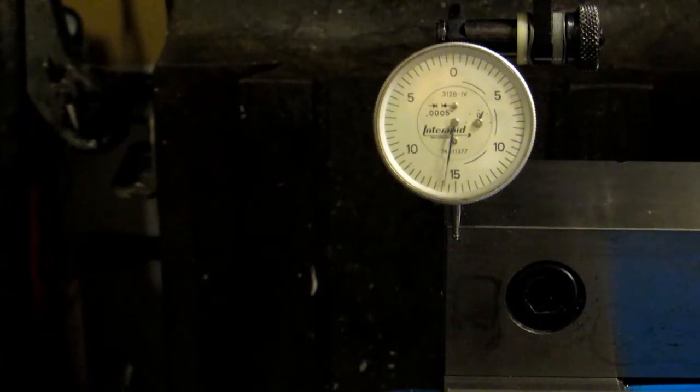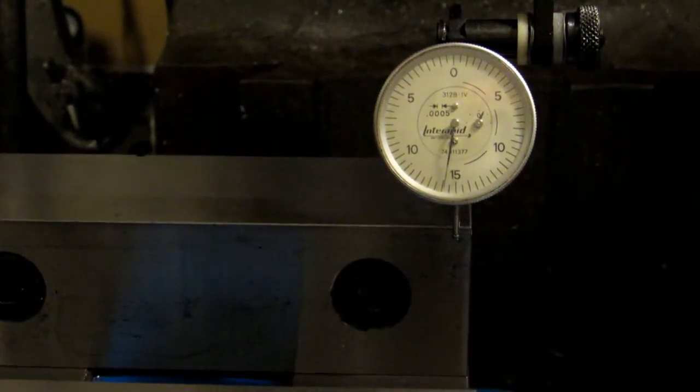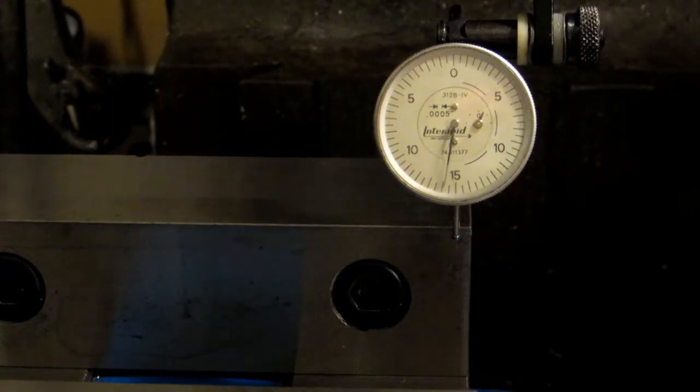There you can see it moved almost a thousandth of an inch. So now we have to go back to our original zero and just check to see if the vise moved or if it was just the table moving under the force of tightening that nut.